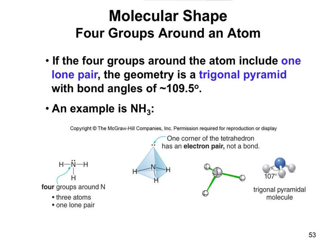We refer to this as trigonal pyramid, or sometimes you'll see it written as trigonal pyramidal with an AL at the end. You'll see it written both ways. Trigonal pyramidal basically means that you're going to have these three groups, and then up here, not depicted, is the lone pair of electrons.